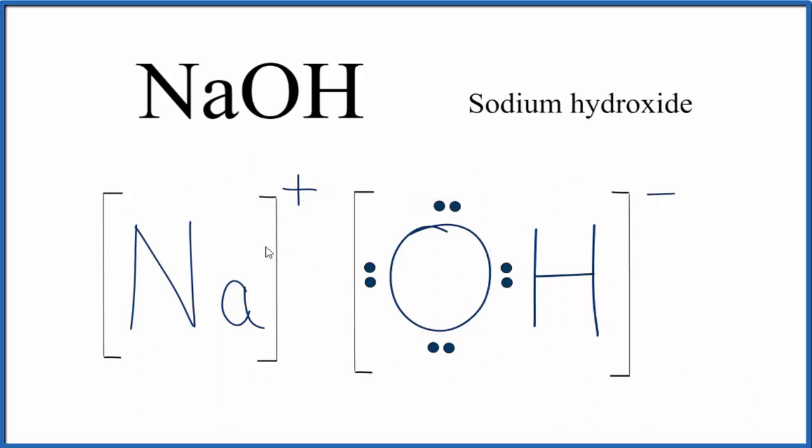So in our Lewis structure here, the sodium lost an electron. Because it lost an electron and electrons are negative, it became positive. And this hydroxide now has that electron. Because we have a positive and a negative, they're attracted, and that's what forms that ionic bond.